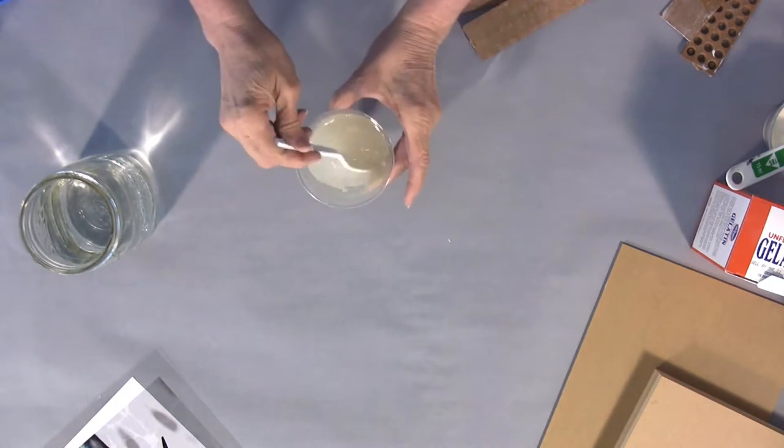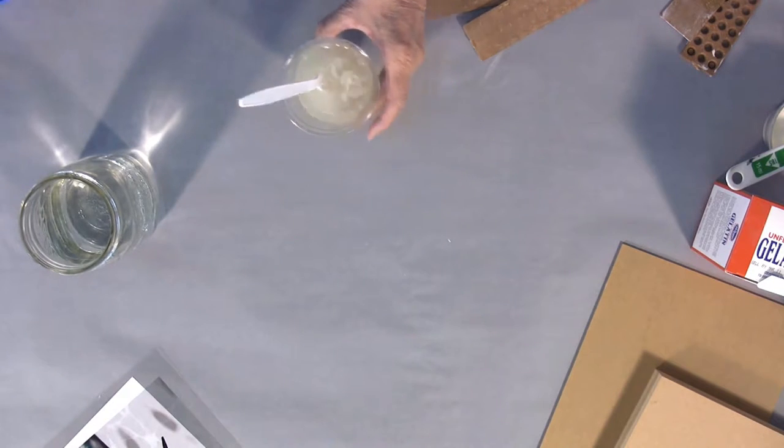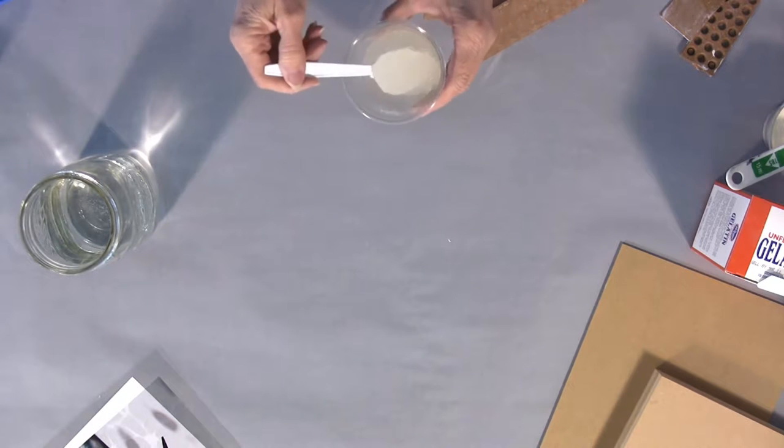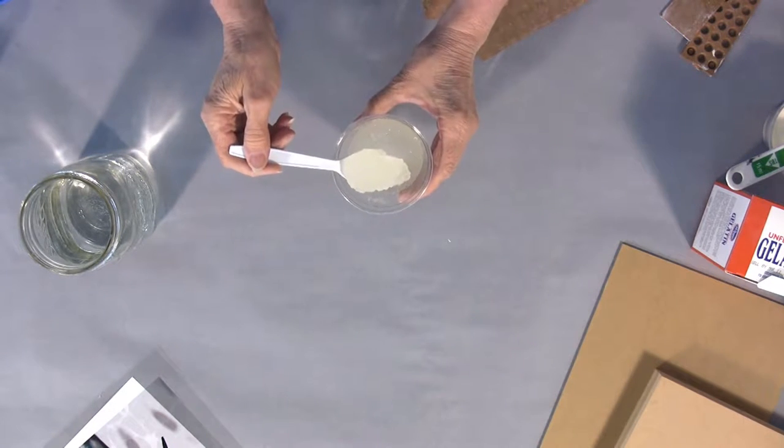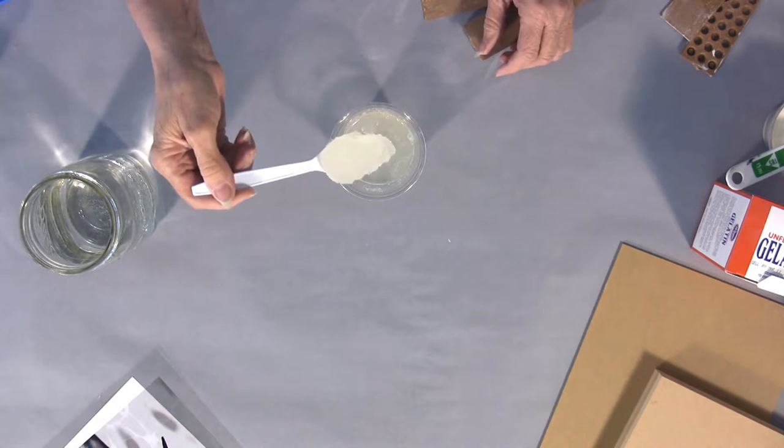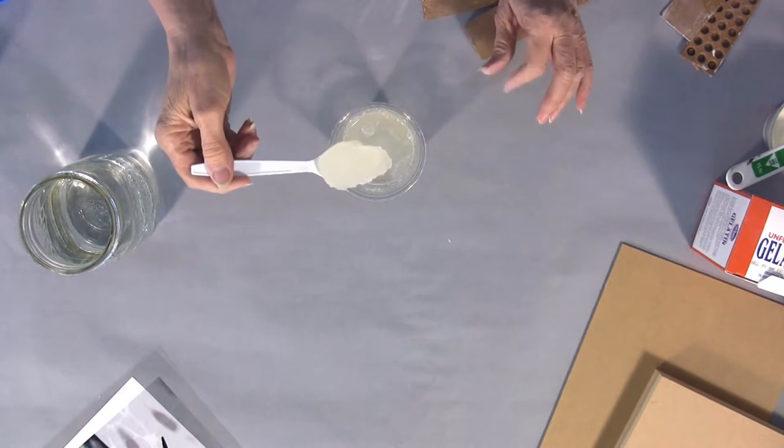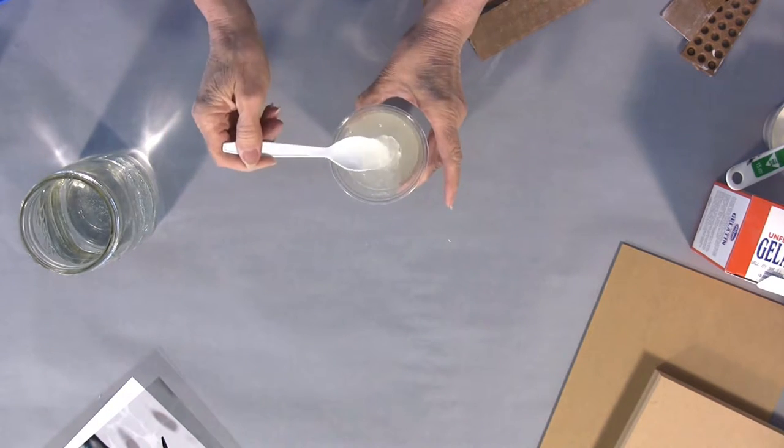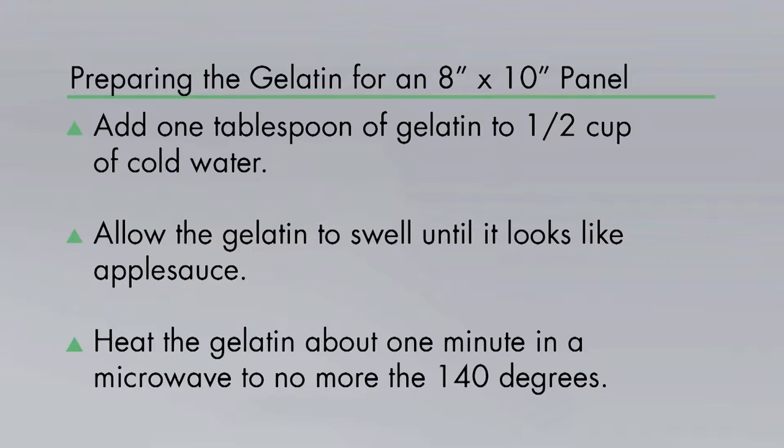Mix that up in the water and after about a half an hour this is going to swell up and become like applesauce. So you can see how that really sets up. That is the state at which we can heat this. Now this is going to go into a microwave oven for one minute. Again the recipe is one tablespoon of gelatin to a half cup of water that has some sodium benzoate in it.